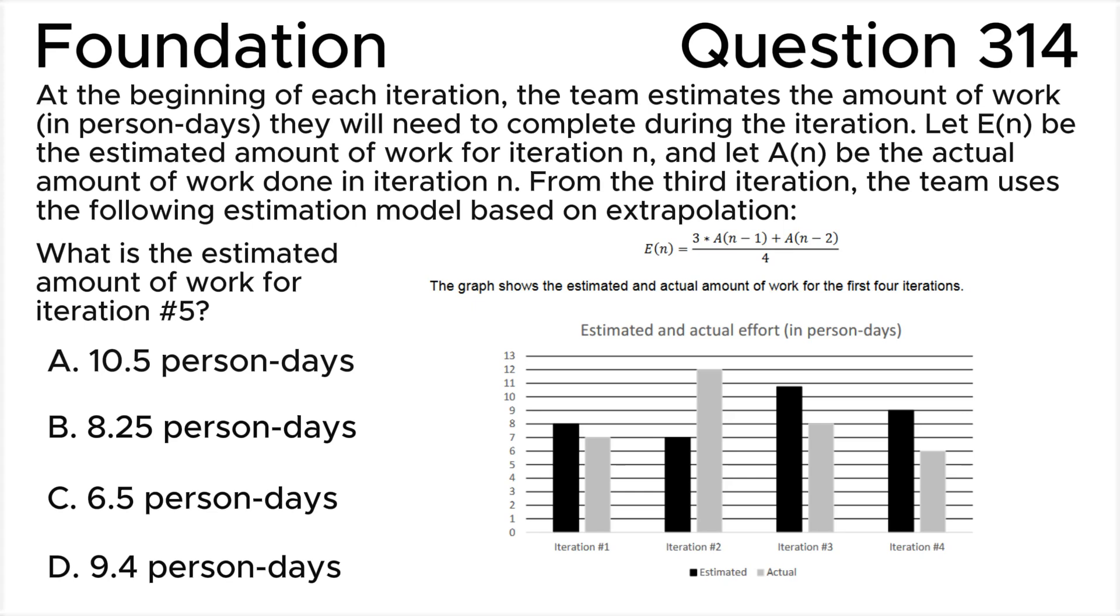ISTQB Foundation Level version 314. At the beginning of each iteration, the team estimates the amount of work in person-days they will need to complete during the iteration. Let E(n) be the estimated amount of work for iteration n, and let A(n) be the actual amount of work done in iteration n.